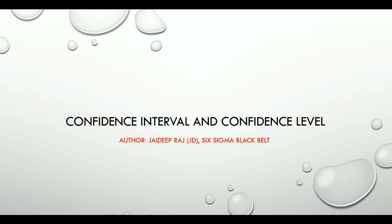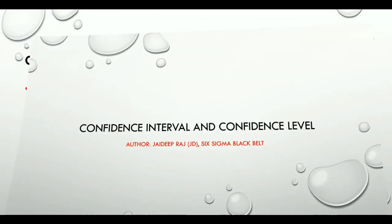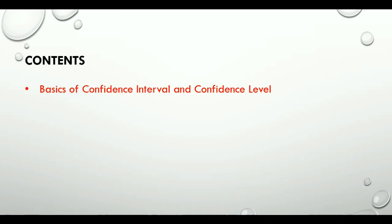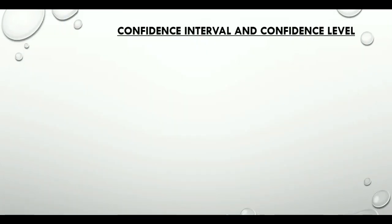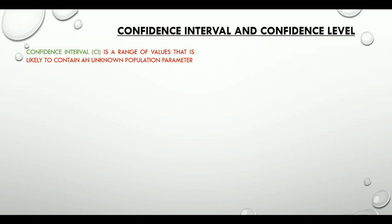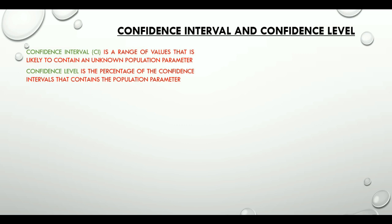Hello everyone, welcome to this video where we will try to understand the basic concepts of confidence interval and confidence level. Confidence interval is a range of values that is likely to contain an unknown population parameter. Confidence level is the percentage of the confidence intervals that contains the population parameter. A 95% confidence level is widely used across industries.